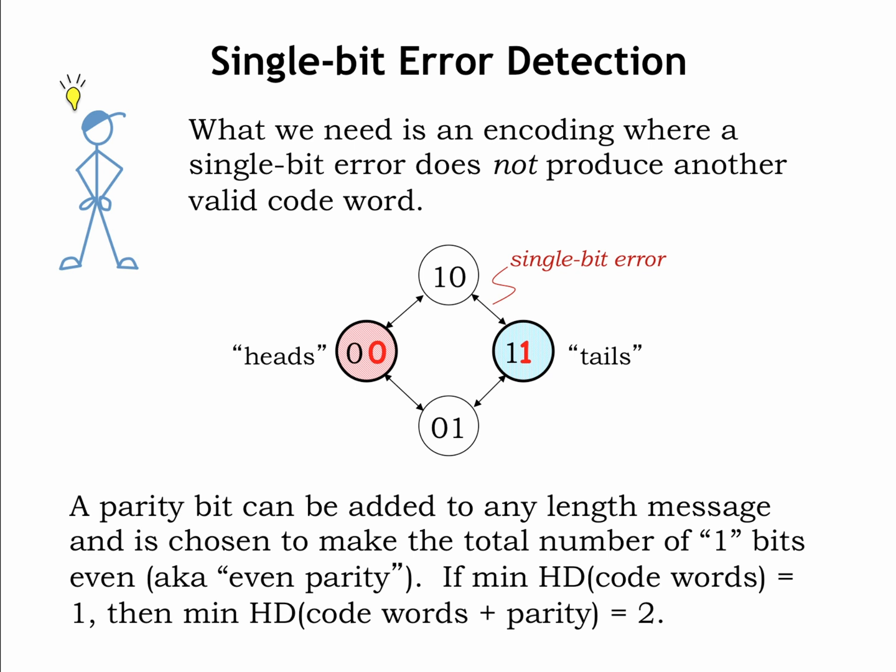Similarly, single-bit errors for 1,1 would also be detected. Note that the valid codewords 0,0 and 1,1 both have an even number of 1 bits, but that the corrupted codewords 0,1 or 1,0 have an odd number of 1 bits. We say that corrupted codewords have a parity error.